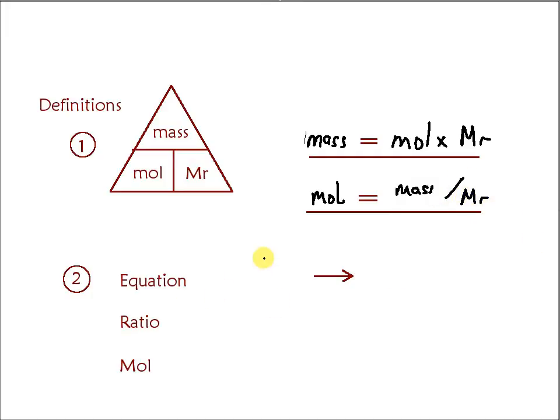The second idea is that if we've got an equation where A reacts to give 2B, then the ratio of A to B is 1 to 2. That means however much of A you've got, say 0.02 mole of A, that would form twice as much, so 0.04 mole of B.